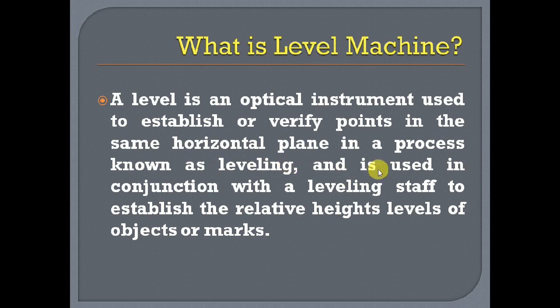It is used in conjunction with a leveling staff to establish the relative heights and levels of objects or marks. In simple terms, a level machine is an instrument used to know the elevation or level of particular points — like buildings, roads, or other points — with respect to known points. We transfer the level from a benchmark or known points using a staff.